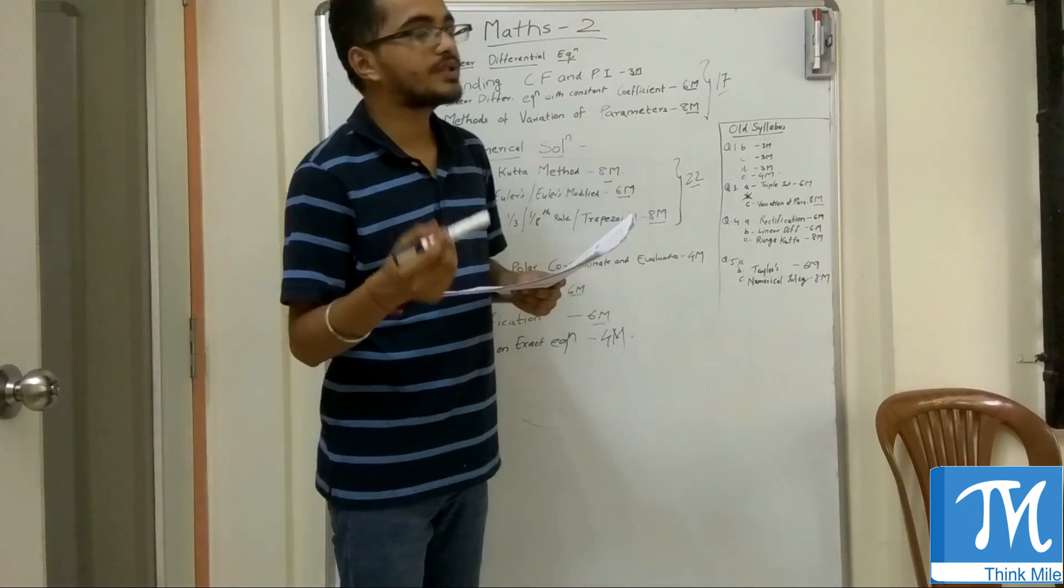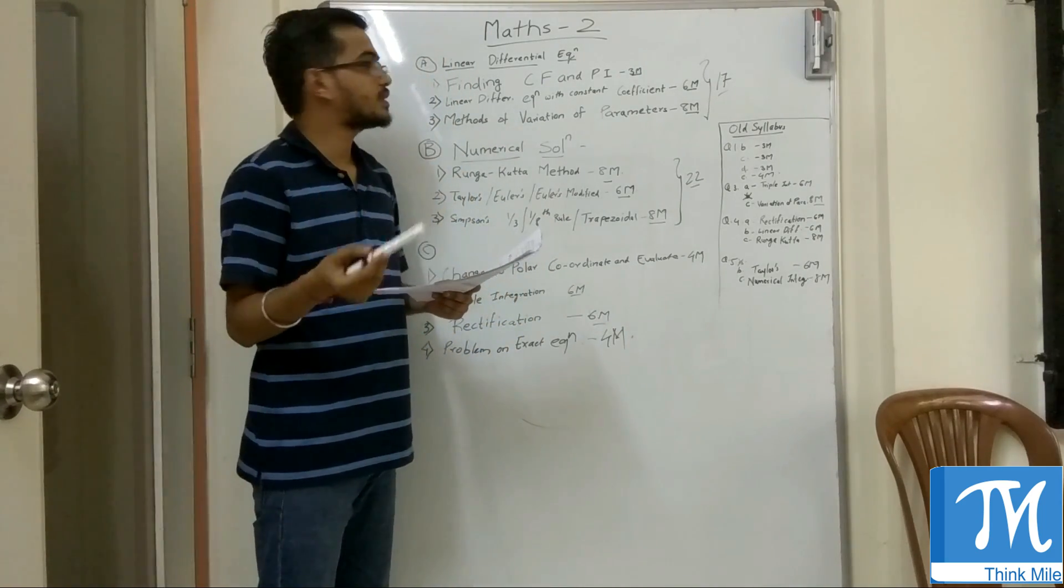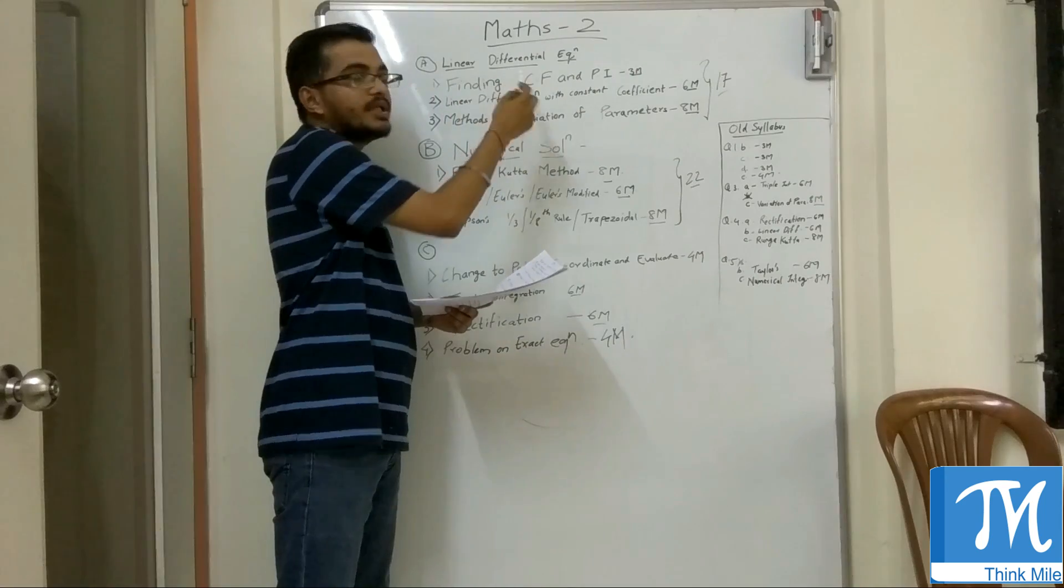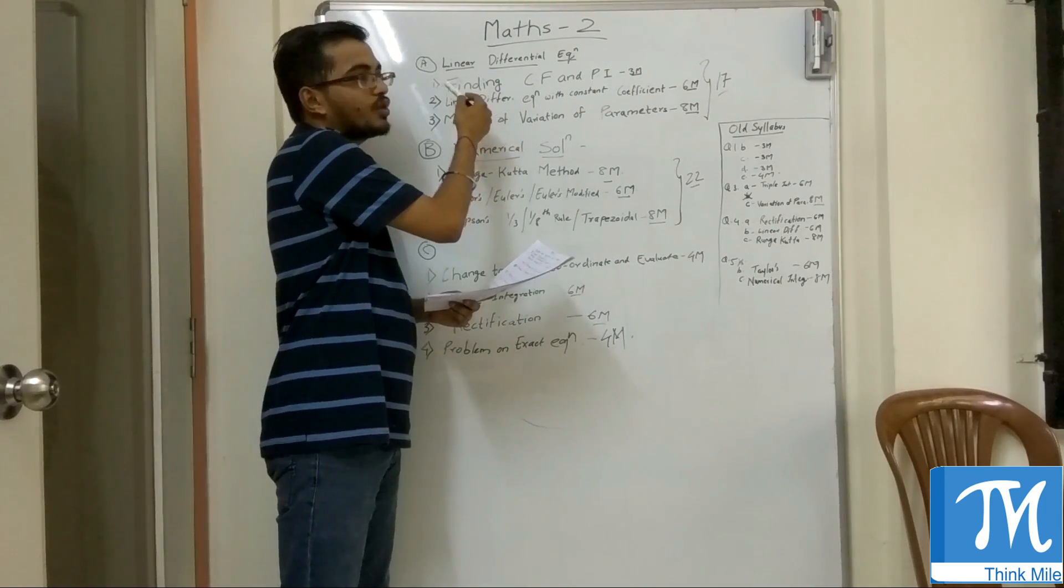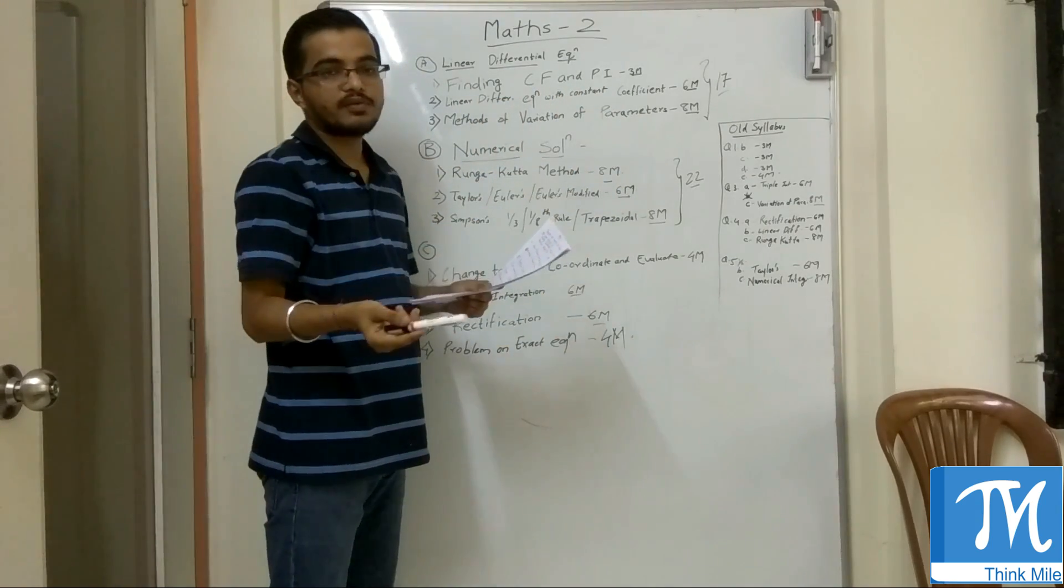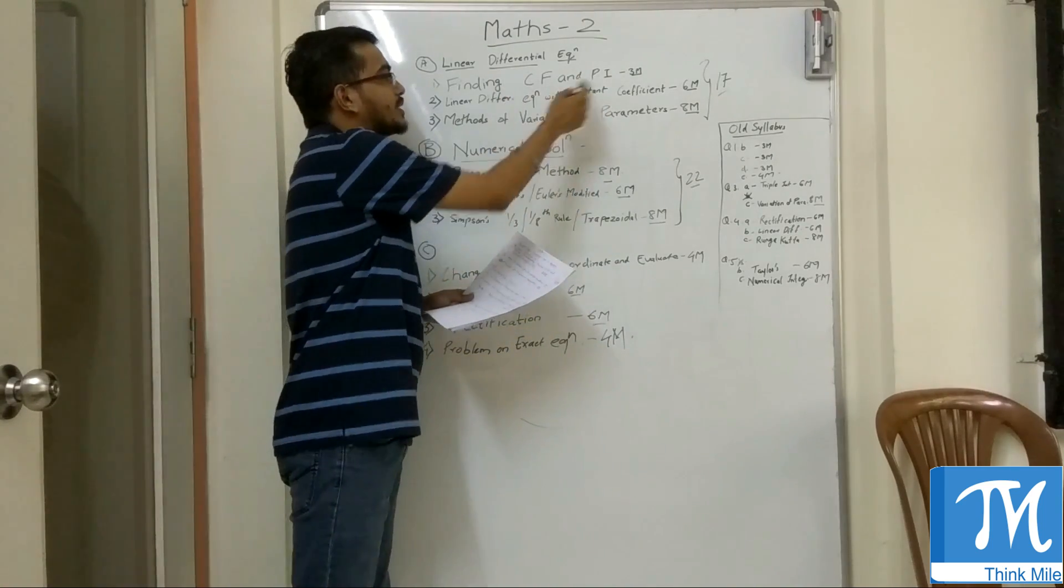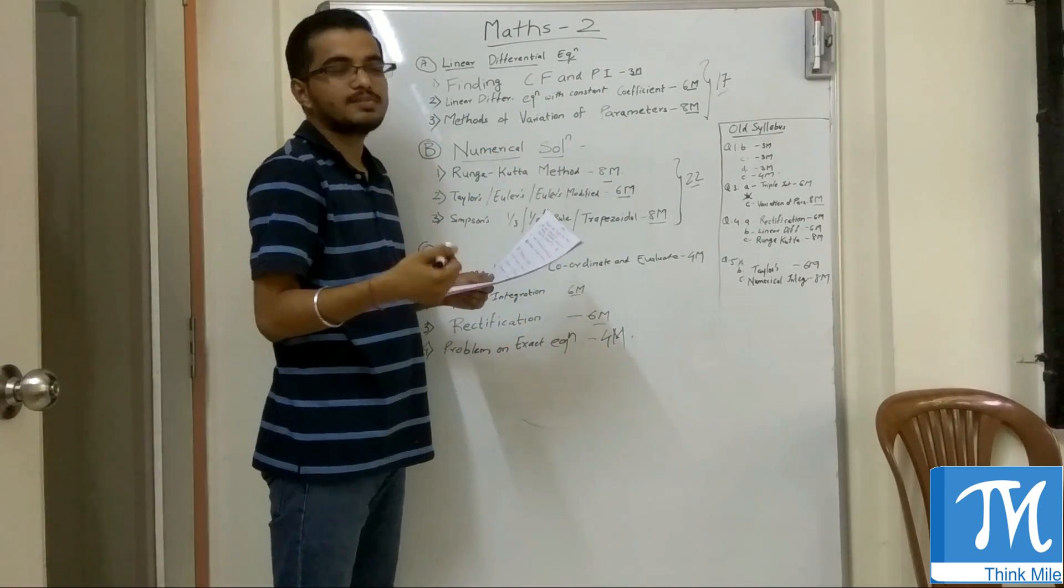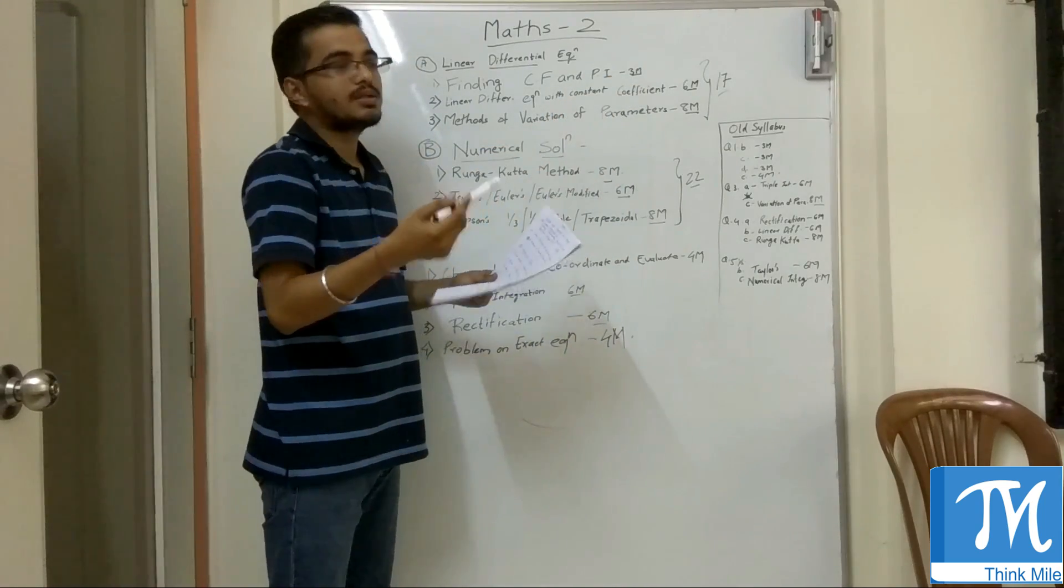I have given a few of the questions that students can do to clear Maths 2. First question is from linear differential equation chapter. You can attempt finding CF and PI. CF is a complementary function and PI is a particular integral. In this type of questions, in most of the cases it is 0. So this is a very simple question for 3 marks.